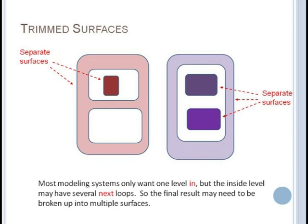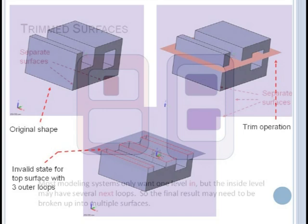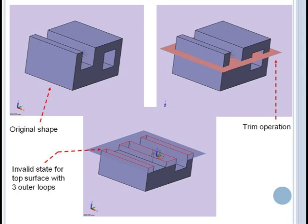Most modeling systems prefer to have their faces stored with only one outer loop and one level of inner loop nesting. Hence for the examples we just showed this would likely be broken up into five separate faces before adding to the database. Modeling systems should be able to support these general cases since they may occur while performing some geometric operation. The modeling system can break these up into valid faces at the end of the operation.